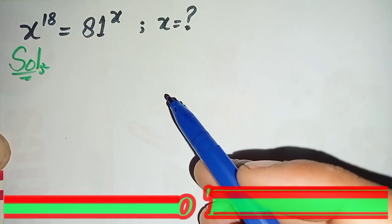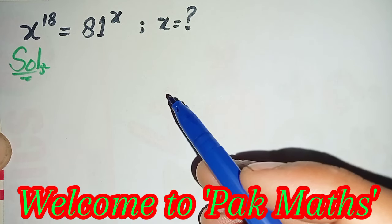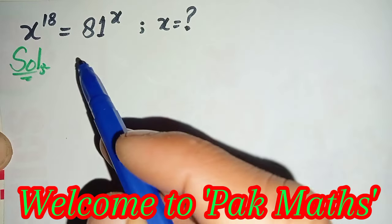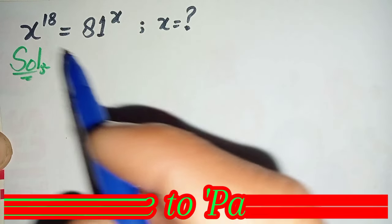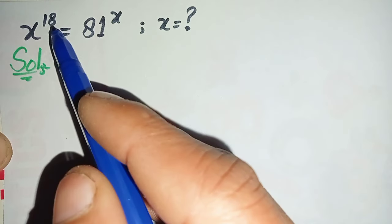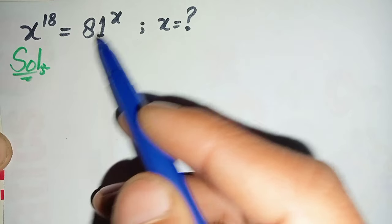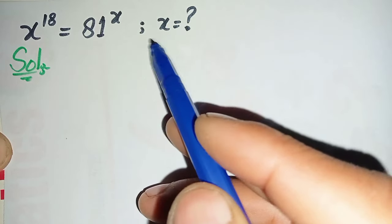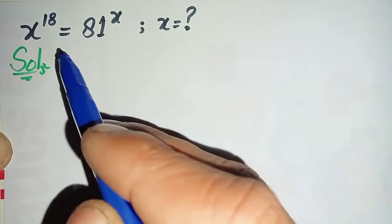Hi everyone, welcome to Parkmas. In this video I'm going to solve this nice exponential math problem: x raised to power 18 is equal to 81 raised to power x. Here we will find the value of x.